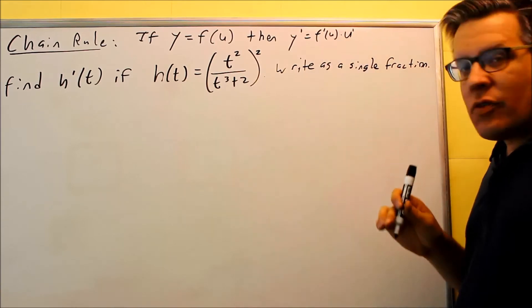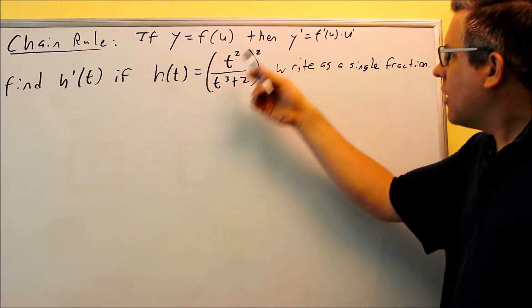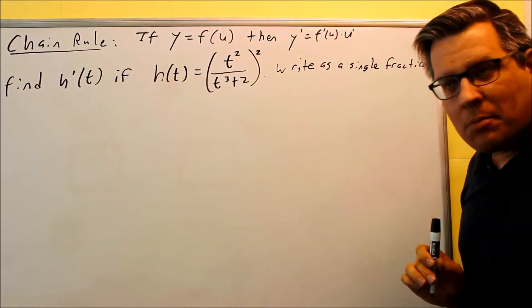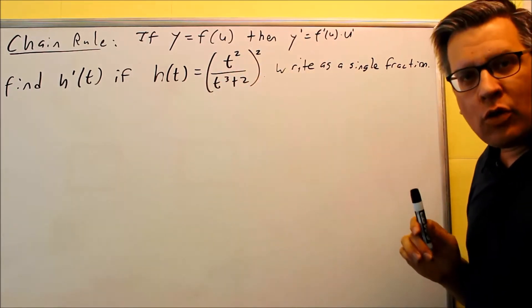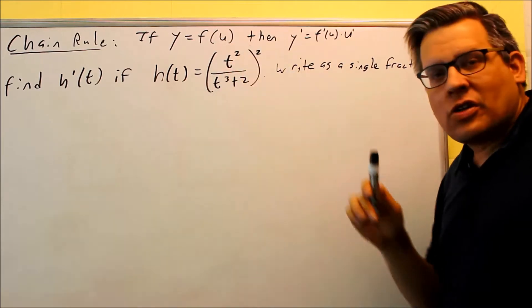Following the formula, we want to do f prime of u, derivative of the outside, times derivative of the inside. The derivative of the outside means the 2 will come down, and you'll apply a power rule to that, and then we'll multiply it by the derivative of the inside.